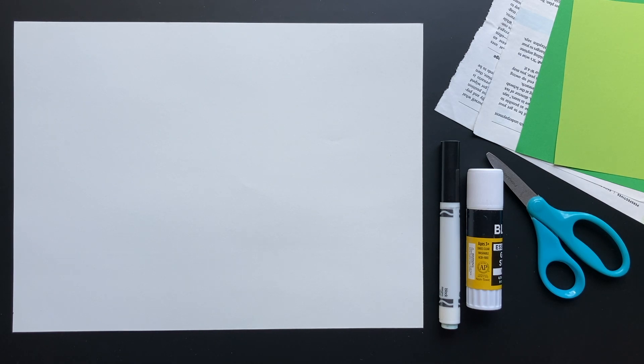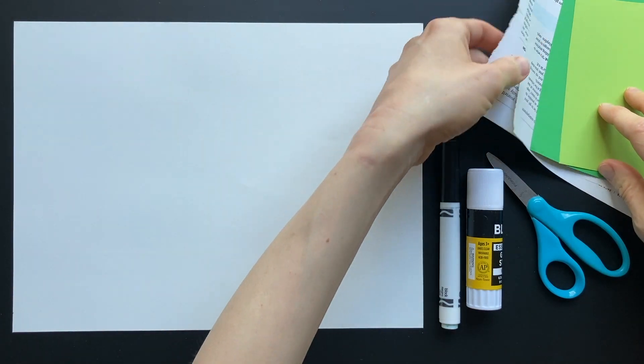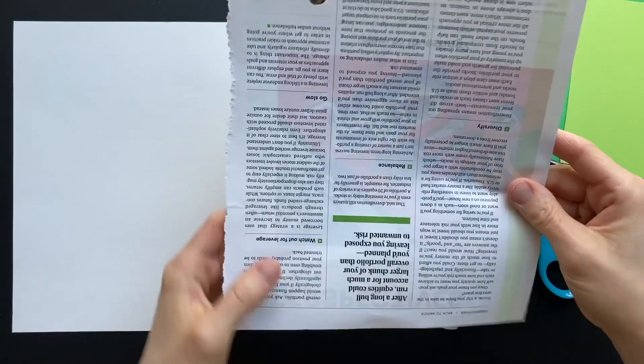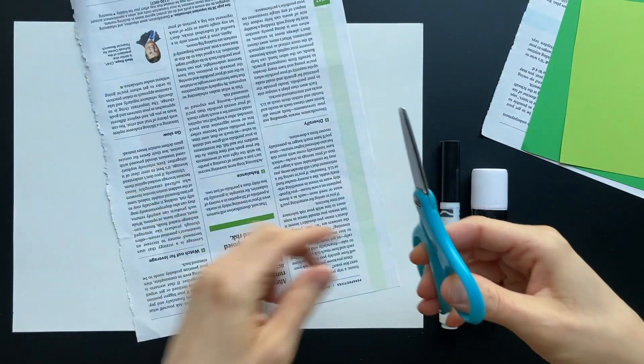Pretend the dinosaurs came back. Think about what kind of dinosaur you would like to show in your artwork. Where would you like this dinosaur to visit? I think my dinosaur will visit the city. These magazine pages might make nice skyscrapers if I cut them into rectangles.